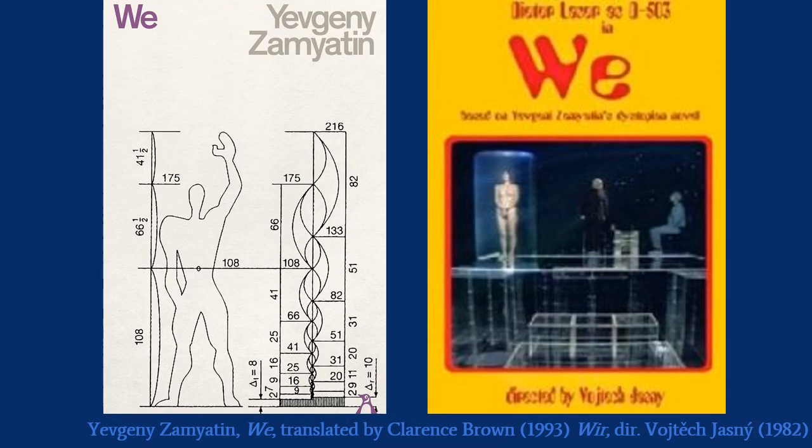I don't read Russian, so I haven't read We in its original form. I'm using the 1993 English translation produced by Clarence Brown — that's where all the quotations in this video are from. To illustrate these points, I'm including some stills from the 1982 German TV film adaptation, Wir. As you can see by the quality of the poster image, this is not a very widely watched film — it's quite obscure. You can watch it all on YouTube, which I recommend because it's strange but interesting. I think it has some very striking images that will give insight into what the spaces of this text look like.